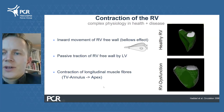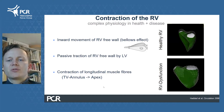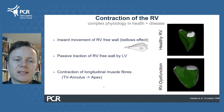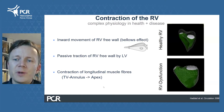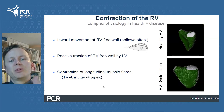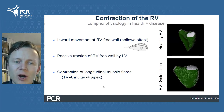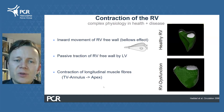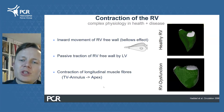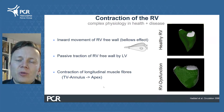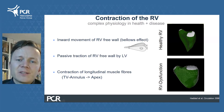The right ventricle has a complex shape and contracts in three separate mechanisms. The movement of the free wall towards the septum produces a bellows effect. Then there's traction of the free wall secondary to LV contraction, and then there is longitudinal shortening, which accounts for the majority of normal RV function. However, this might not hold true in the setting of RV dysfunction.